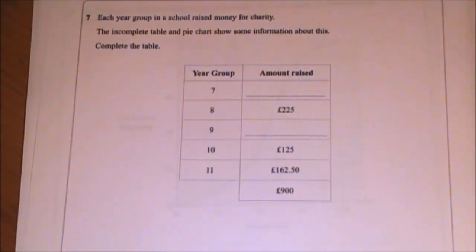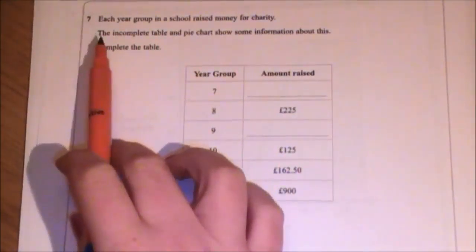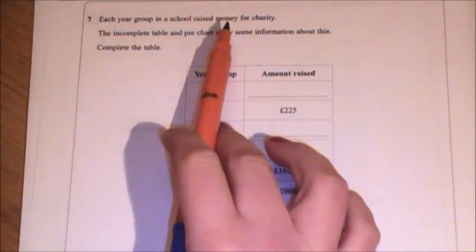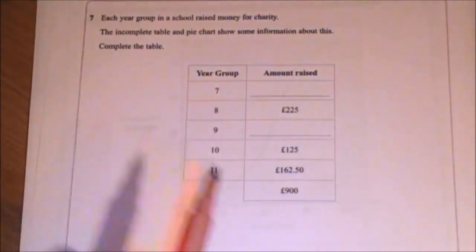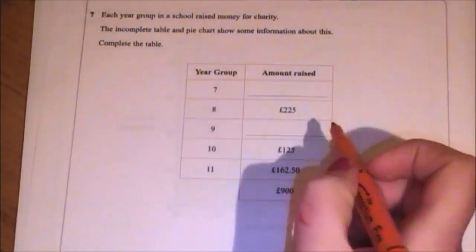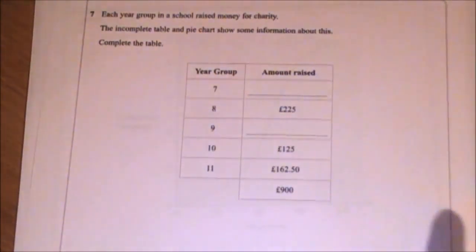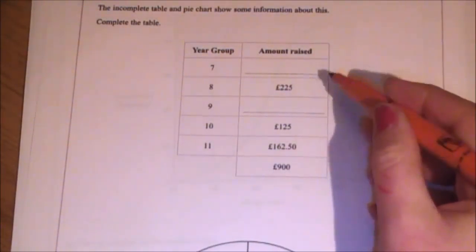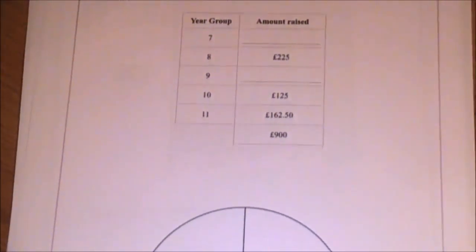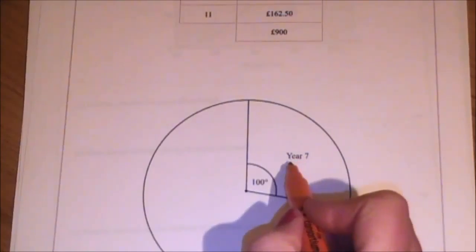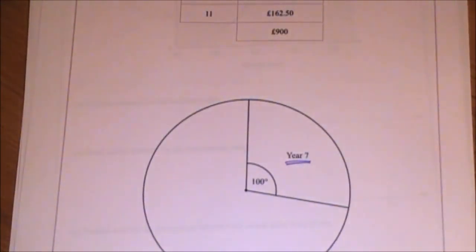Question 7 is a pie chart question. However, it's more about using a pie chart. It does not ask you to draw one. Don't be fooled into thinking it's asking you to draw a pie chart. It isn't. Each year group in a school raised money for charity. The incomplete table and pie chart show some information about this. Complete the table. That is all they're asking you for. They're not asking you to complete the pie chart. If I only had one of them missing, it would be easy because I could take all of these away from 900, but I haven't. The fact that they've given me an incomplete pie chart means I'm going to have to deal with the information there first.